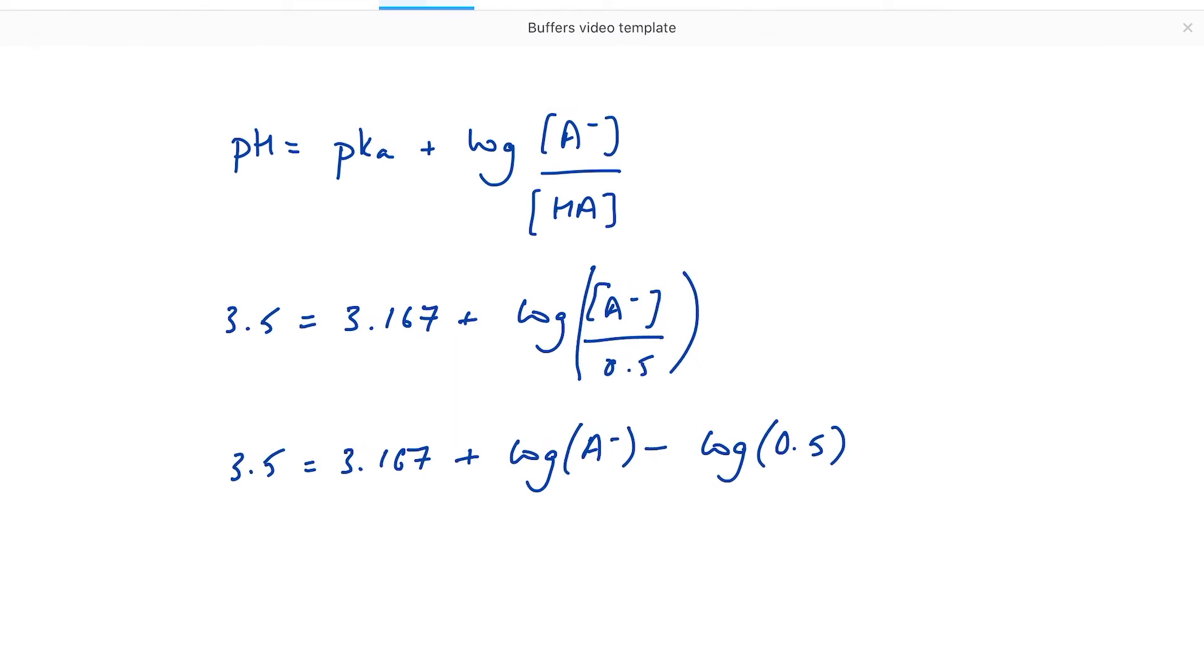If I rearrange that and solve it for log A-, that comes to 0.032, which means that the concentration of the salt is 10 to the power of 0.032, which comes out at 1.08 mol per decimetre cubed.